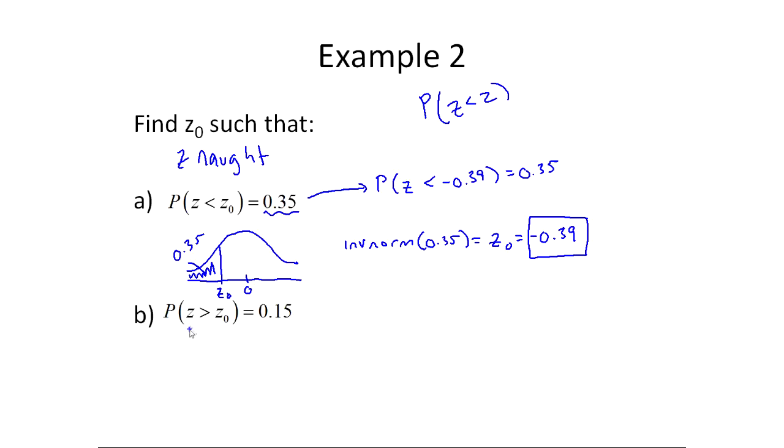Similarly with this question, what's probability that z is larger than z naught? We're told the answer is 15%. So what I'm essentially being told is that if you were to draw this picture, 15% of the area is to the right, because they're greater than, of z naught. But you know, I use inverse normal to find z, but this is area to the right, we've got to use area to the left. So the answer here is going to be inverse normal of not 0.15, but 0.85. And when you do this, you get z naught which is equal to 1.03.